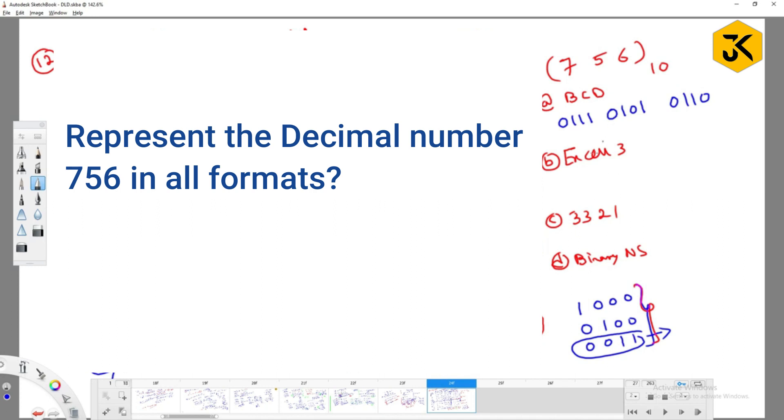What about XS3 of 756? 1, 0, 1, 0. Because 7 plus 3 is 10. And this number is 5 plus 3 is 8, meaning that 1, triple 0. 6 means 1, double 0, 1.